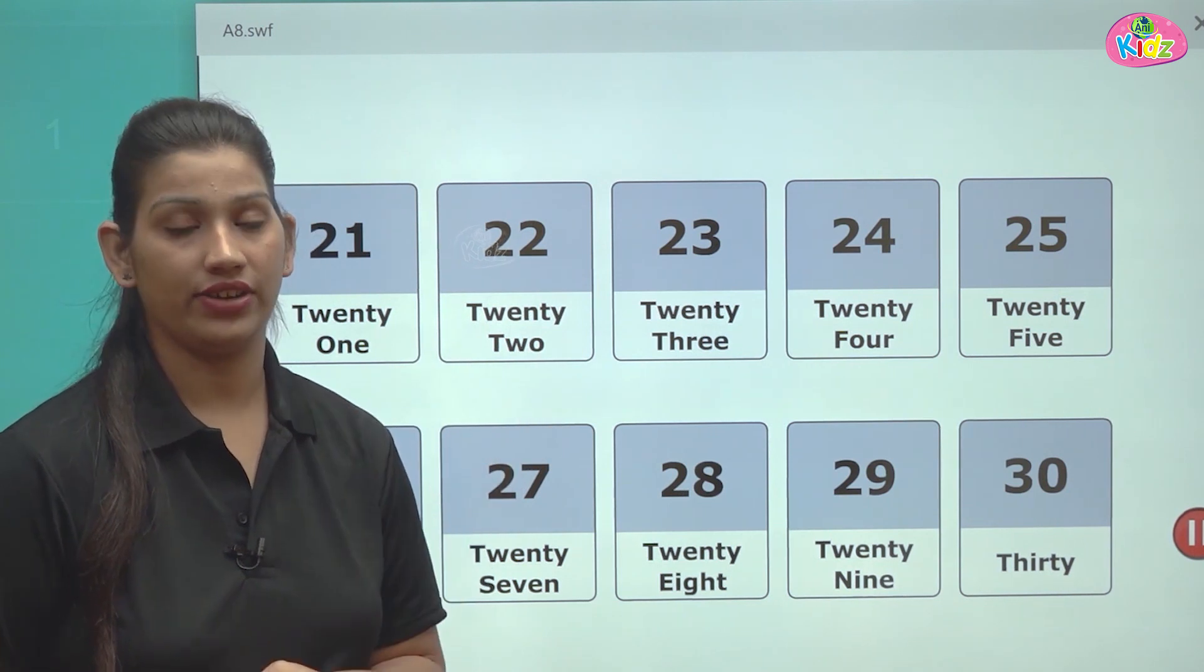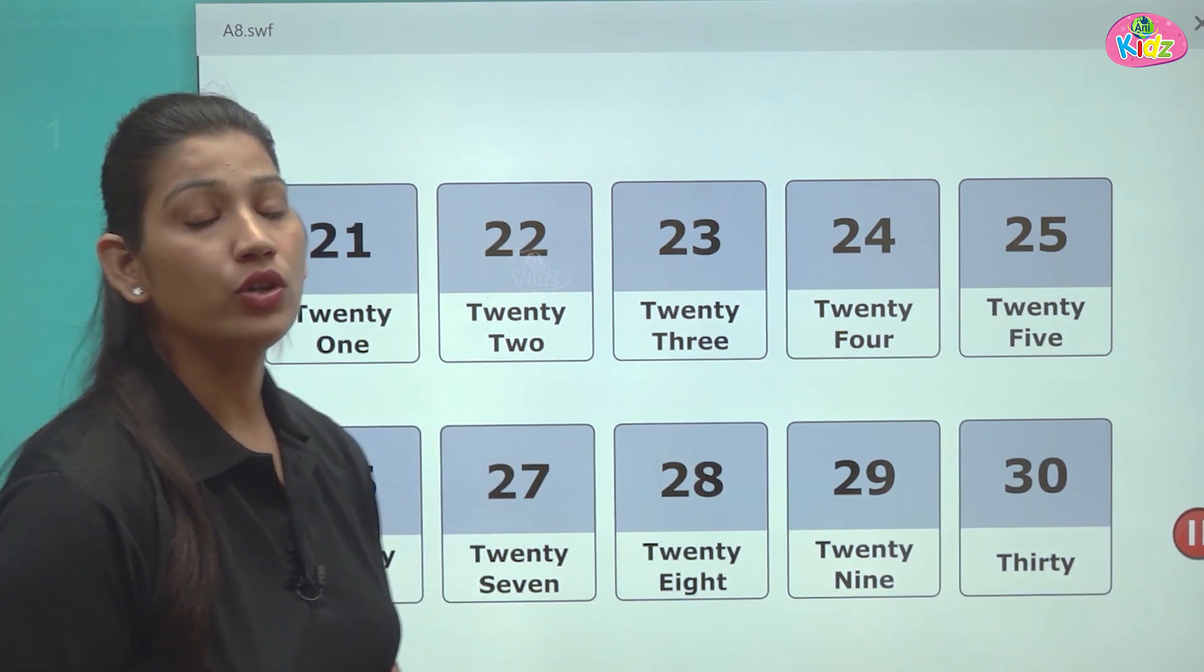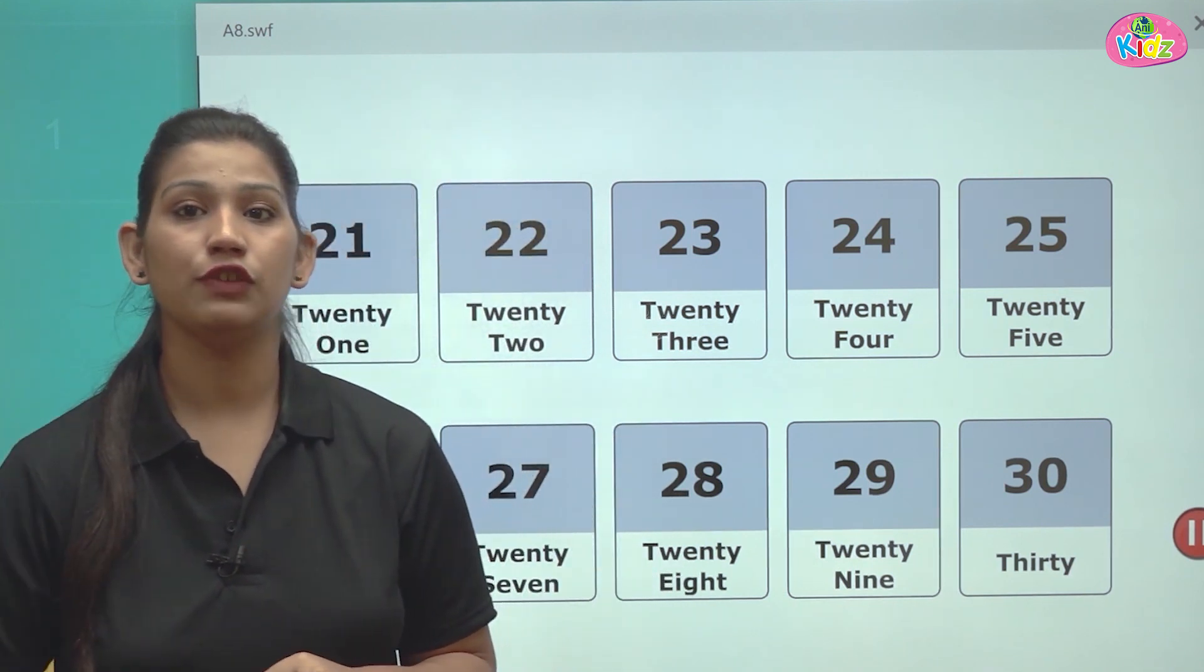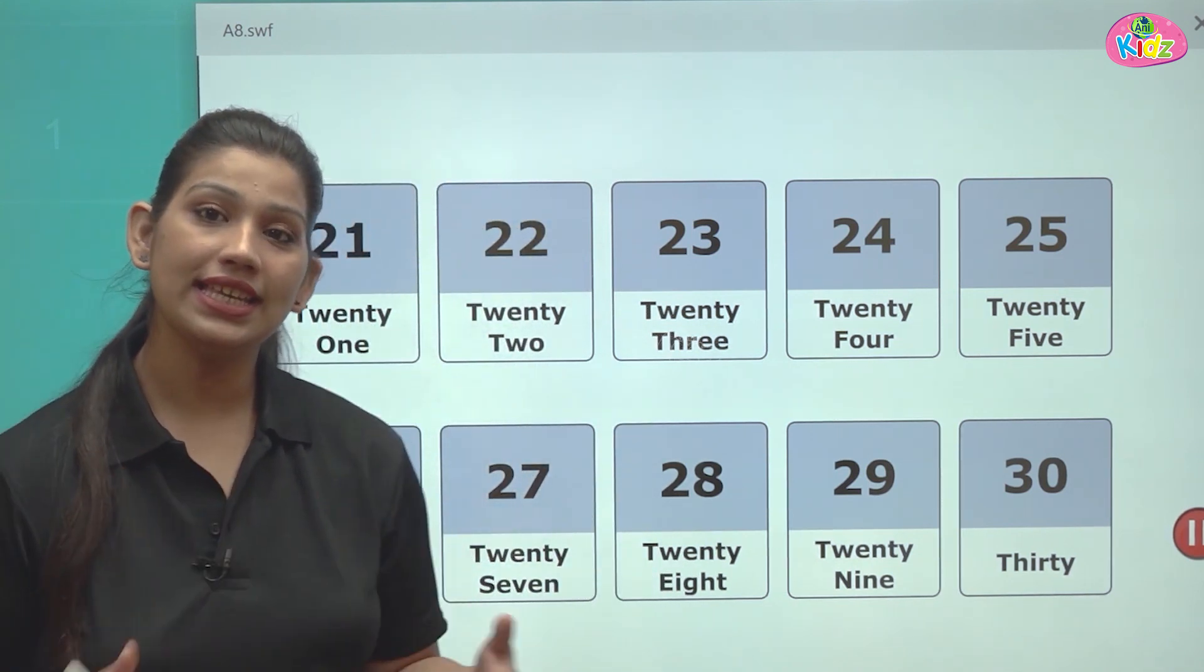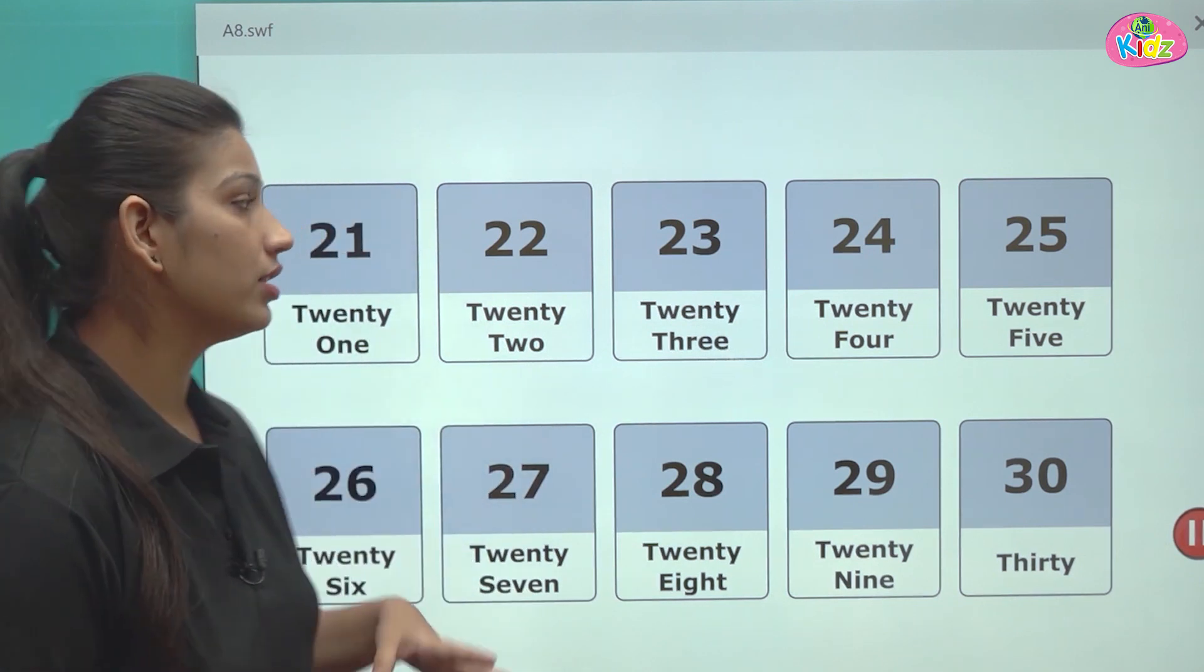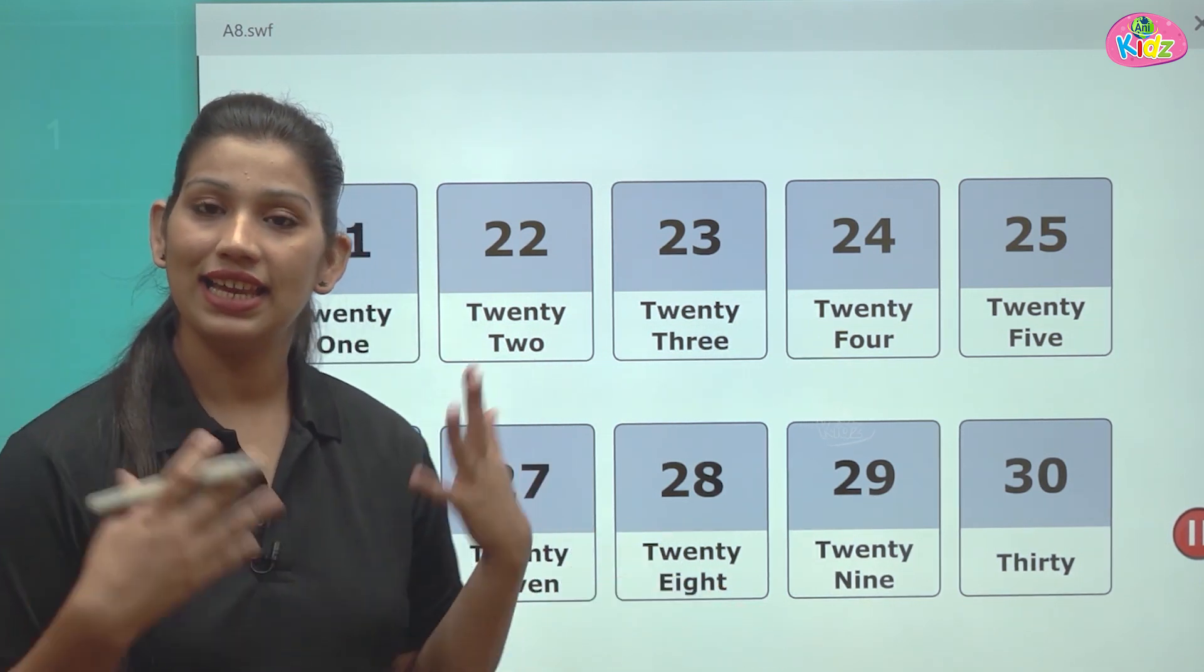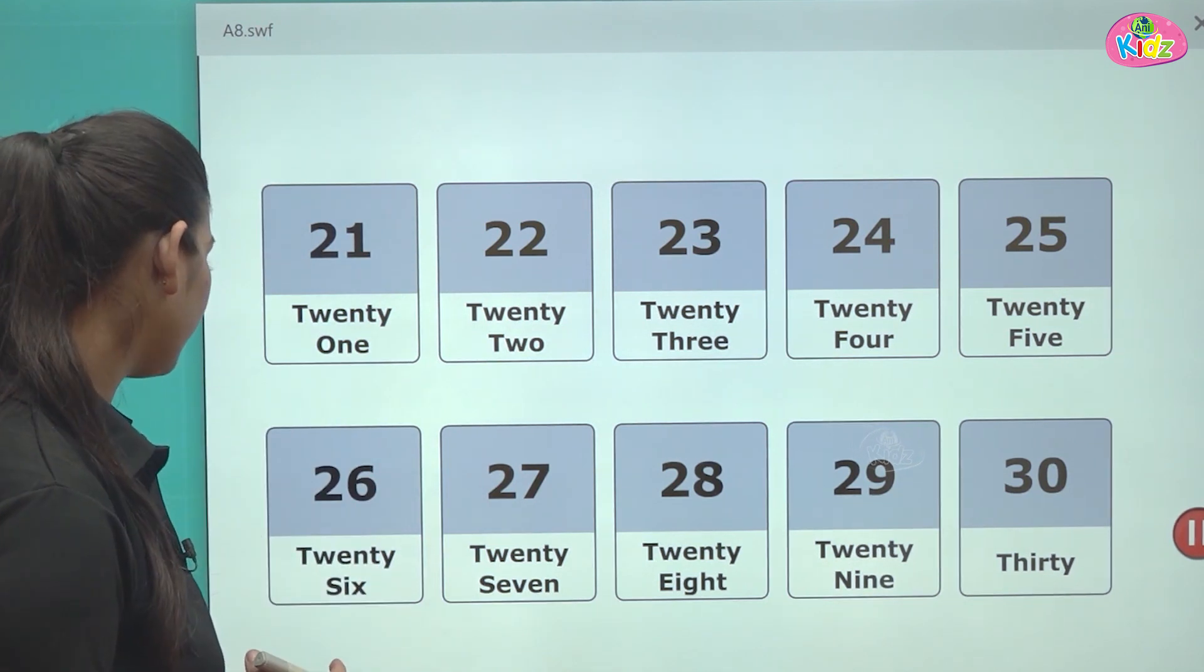20 ke baad yahi pattern rehta hai numbers ka, aapko jo numbers hai, unko yaad karna hota hai, 20, 30, 40 and then you can easily write all of the numbers from 21 to 29, 31 to 39.